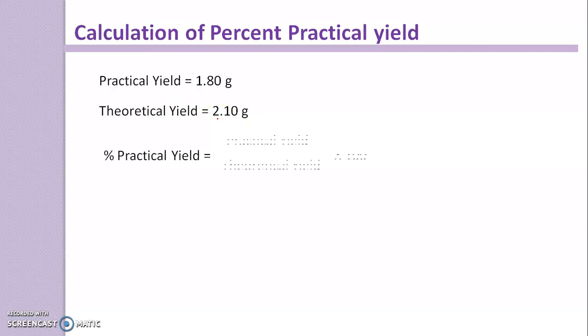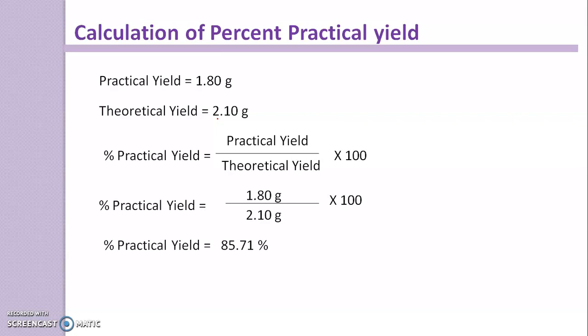Next is the calculation of percent practical yield. After you have taken the weight of your product, suppose it is 1.8 grams, and your theoretical yield is 2.1 grams. Use this formula: percent practical yield equals practical yield divided by theoretical yield times 100. Put the values and you will get the percent practical yield.